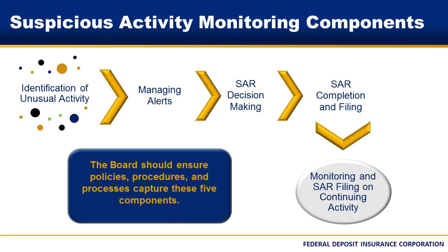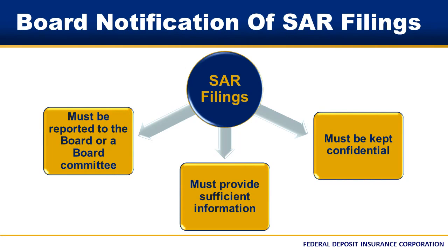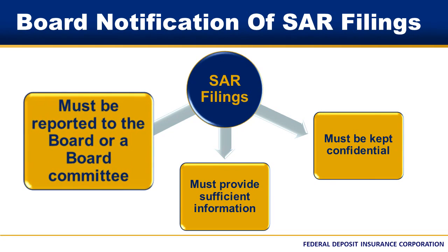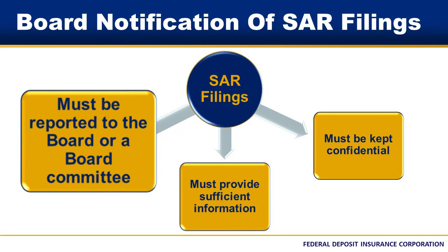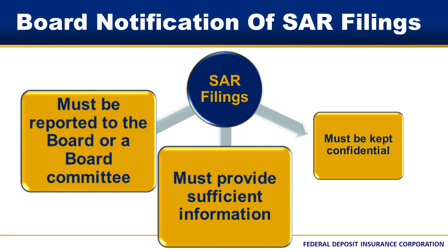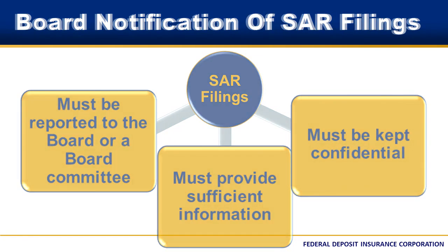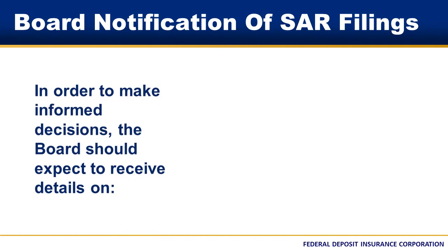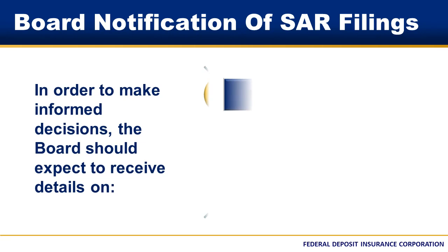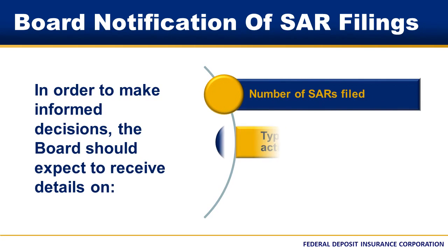We've just covered the five elements of an effective suspicious activity monitoring program. Let's talk more about the board's role in SAR filings. Established policies should address board notification of SAR filings. Management is not required to provide actual copies of SARs to the board. However, the board or committee of the board must be promptly notified of SAR filings. It is critical that management provide sufficient information on SAR filings to the board, so that board members can fulfill fiduciary duties to the bank while being mindful of the confidential nature of the SAR. Generally, the board should expect to receive information on SAR filings to make informed decisions. This may include details on the number of SARs and the type of suspicious activities.